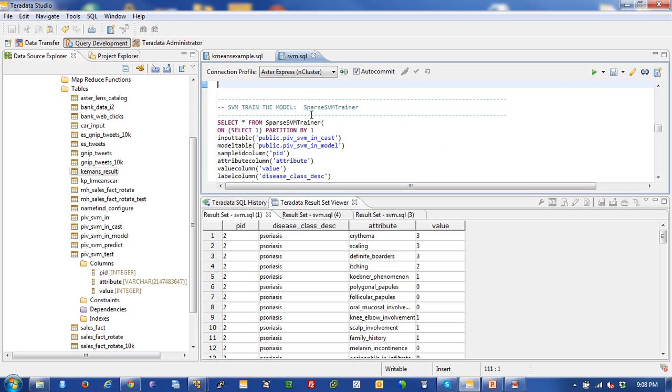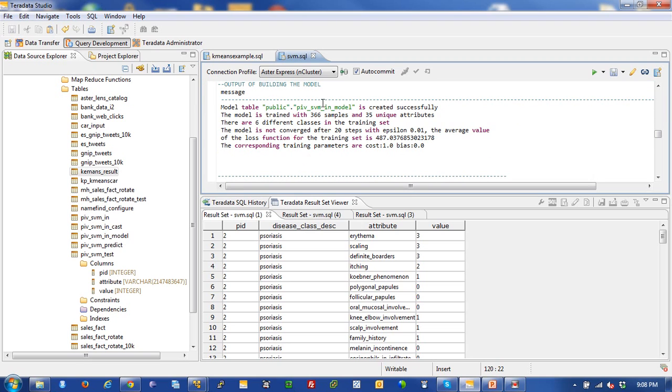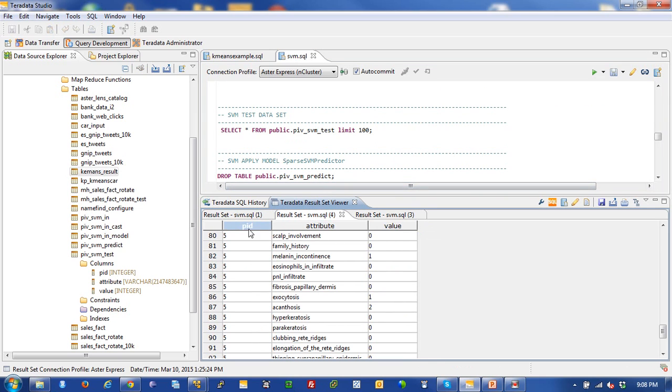And then I come down here. And this is my trainer. This is the Sparse SVM trainer model. It's going to render my model table, PIV SVM in model. And that's going to give me a result set that looks very similar to this right here. It's just going to be an output that says, my model was created successfully. And then I want to take a look at my test data to see what my test data looks like.